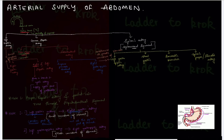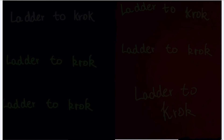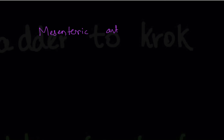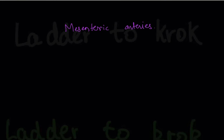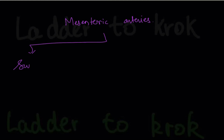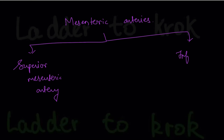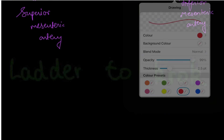We have covered the pancreas, duodenum, stomach, and spleen, but what about the intestines? There are arteries especially for the intestines, and they originate directly from the abdominal aorta. These are the mesenteric arteries — two of them: the superior mesenteric artery and the inferior mesenteric artery, both originating directly from the abdominal aorta.